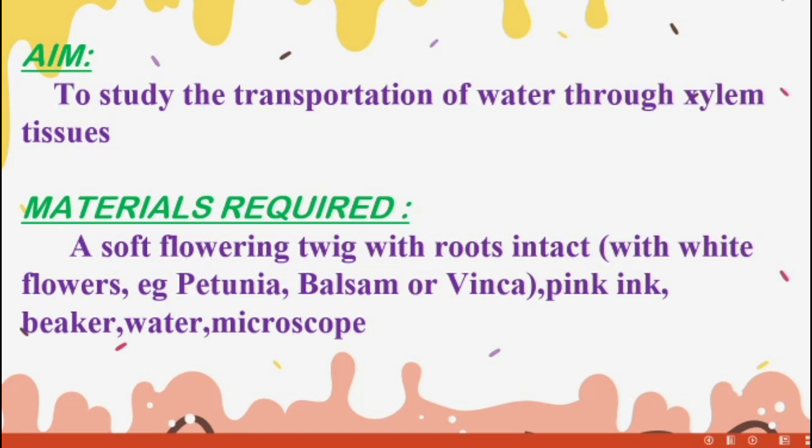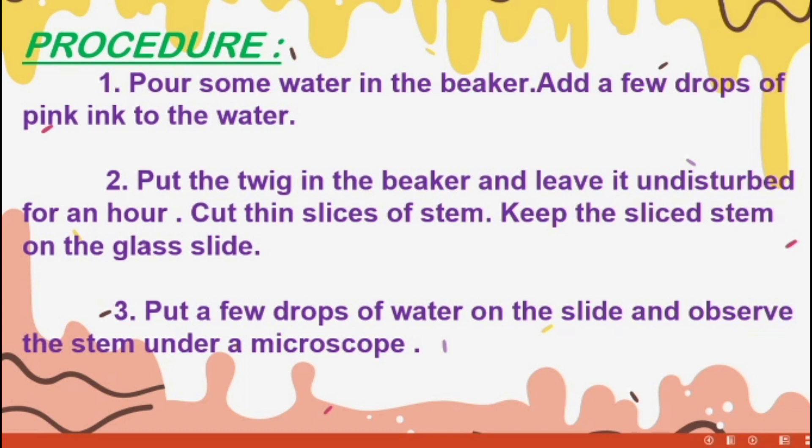Materials required: a soft flowering twig with roots intact with white flowers, example petunia, balsam, or vinca, pink ink, beaker, water, microscope. These are the materials to do the practical's procedure.